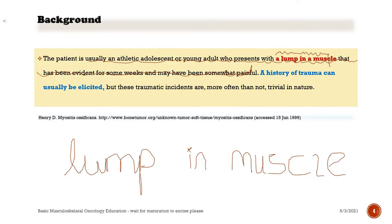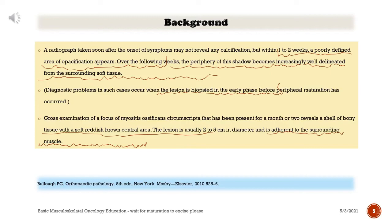A radiograph taken soon after the onset of symptoms may not reveal any calcification, but within one to two weeks, a poorly defined area of opacification appears. Over the following weeks, the periphery of this shadow becomes increasingly well delineated from the surrounding soft tissue. Diagnostic problems occur when the lesion is biopsied in the early phase before peripheral maturation has occurred. Gross examination reveals a shell of bony tissue with a soft reddish-brown central area, usually 2 to 5 centimeters in diameter and adherent to the surrounding muscle.